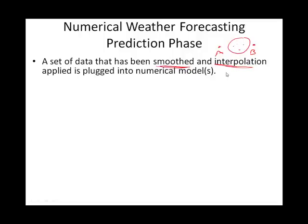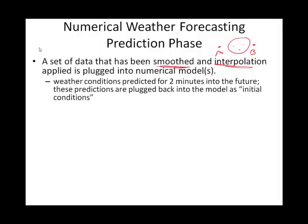They feed the interpolated data into the computer. Now, this is kind of fun. If this is 'now' on a timeline and this is into the future, what they do is they predict not the next hour or next day, but basically just two minutes into the future. They take those forecasted conditions and plug them into the model again, piggybacking another two minutes — so now they're four minutes into the future. Then they plug that result back in as if it were initial conditions again, and the next two-minute segment gets them six minutes down the road.